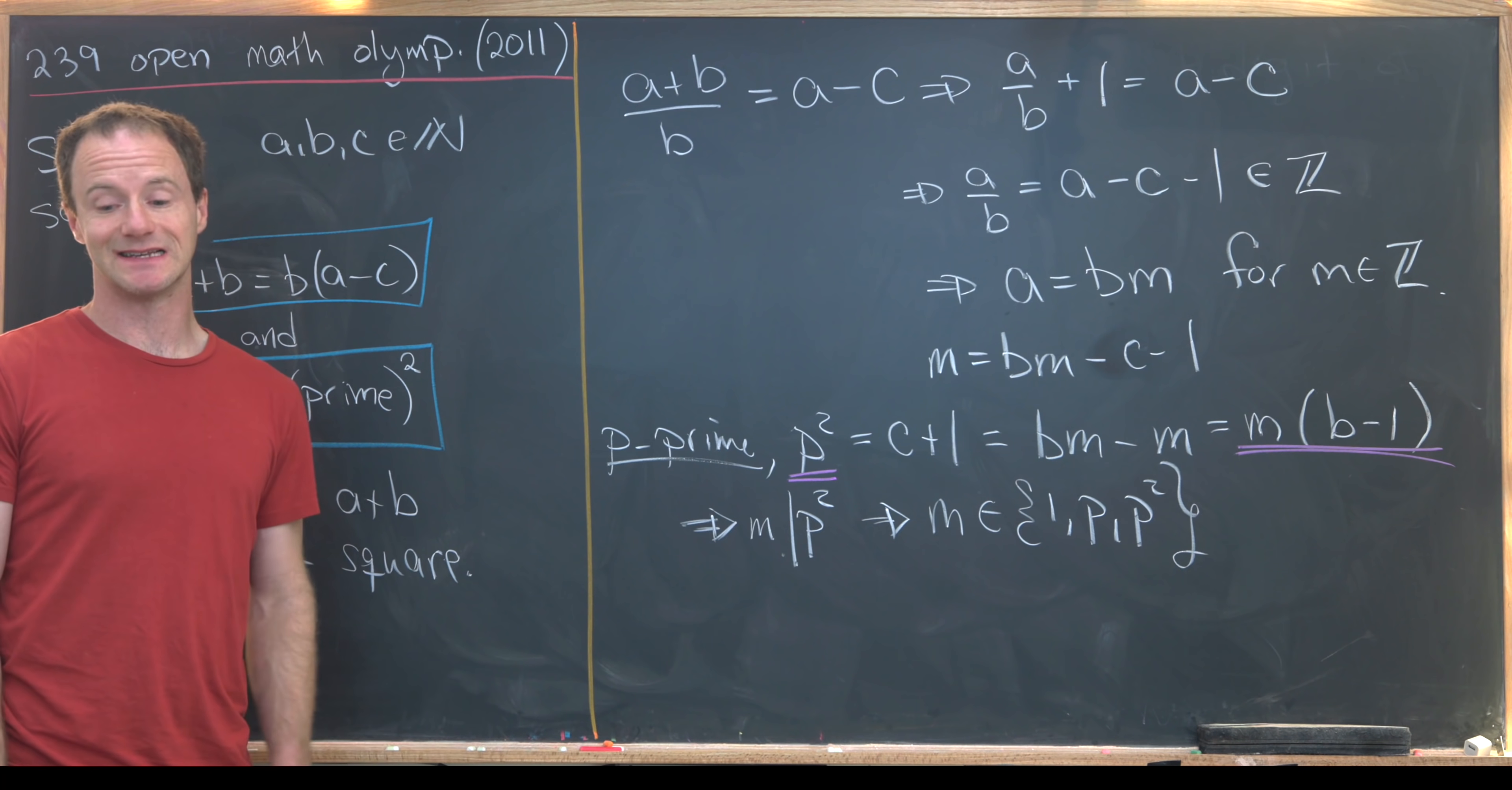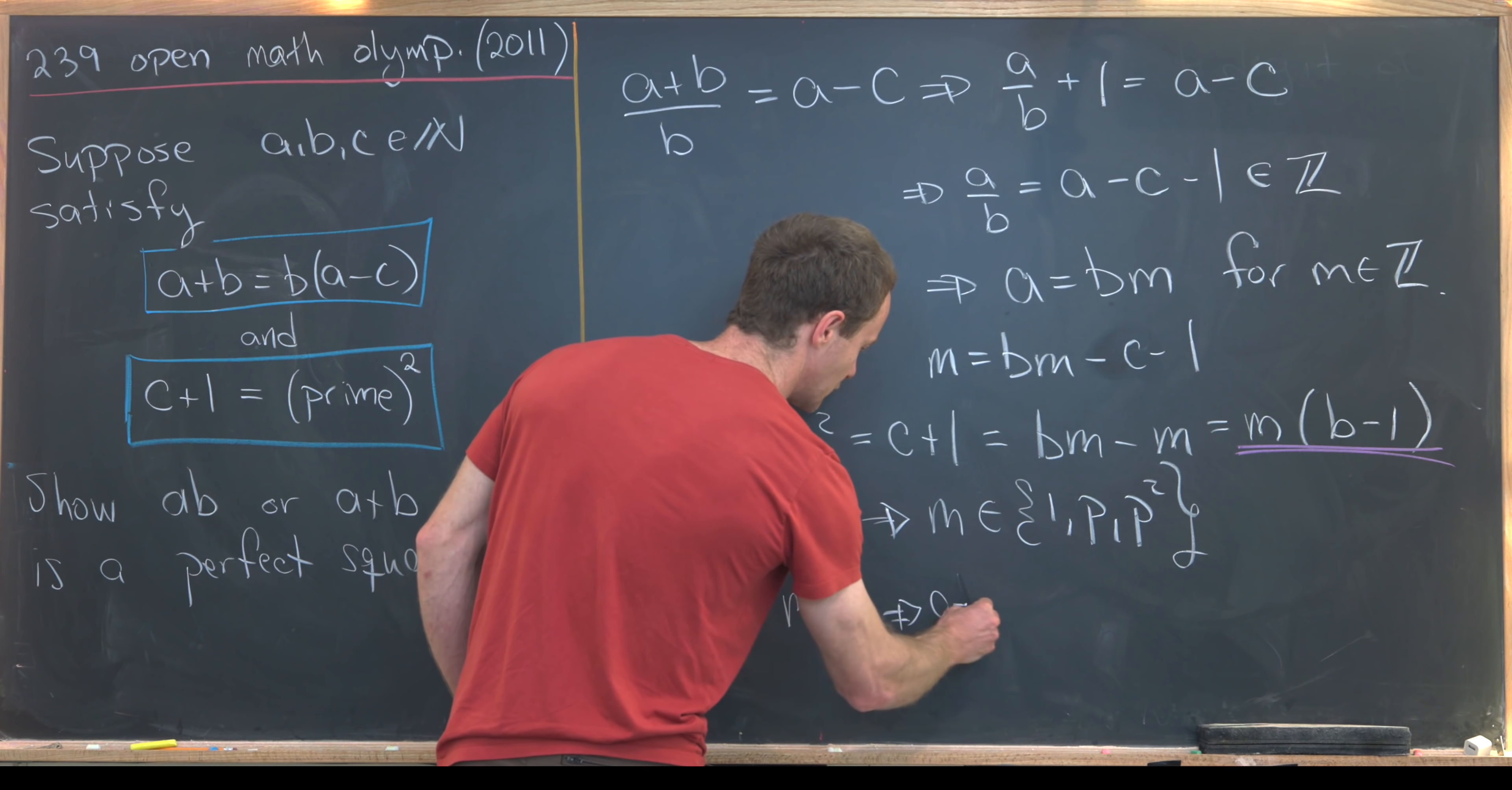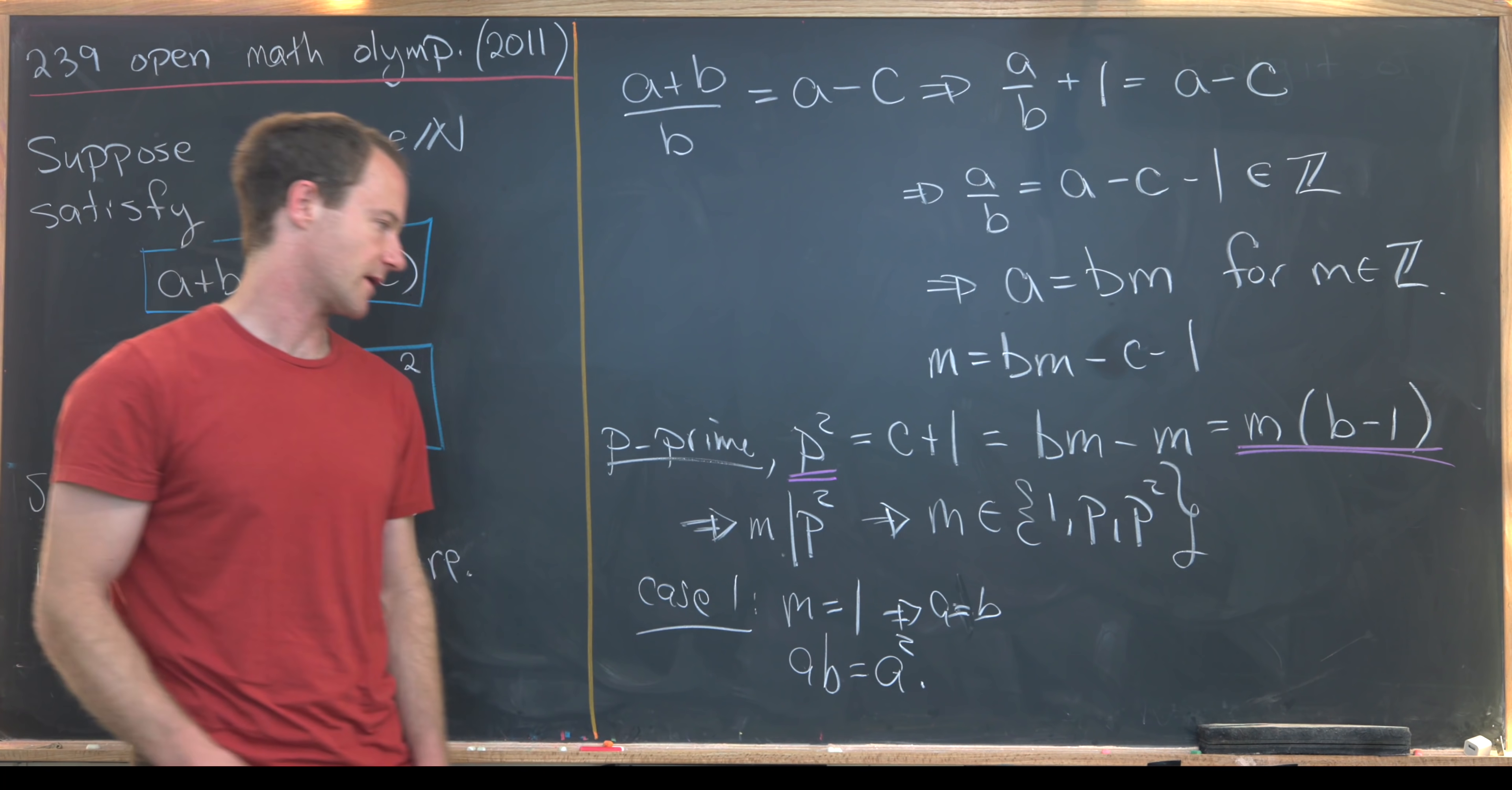And we're going to break these into cases and look at each case one at a time. So we'll start by looking at the easy cases. Case number one is what happens if m is equal to one. But notice if m equals one, that tells us that a equals b given our equation up there. But if a equals b, then ab = a², which is most definitely a perfect square.